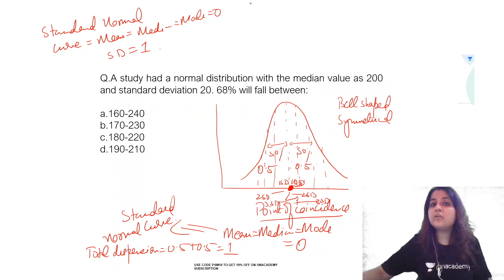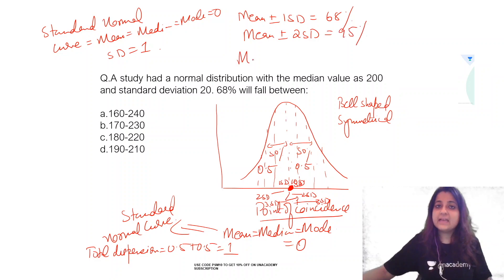And for a standard normal distribution curve, we say mean plus minus 1 SD is equal to 68% observations. Mean plus minus 2 SD is equal to 95%. Mean plus minus 3 SD is equal to 99%.